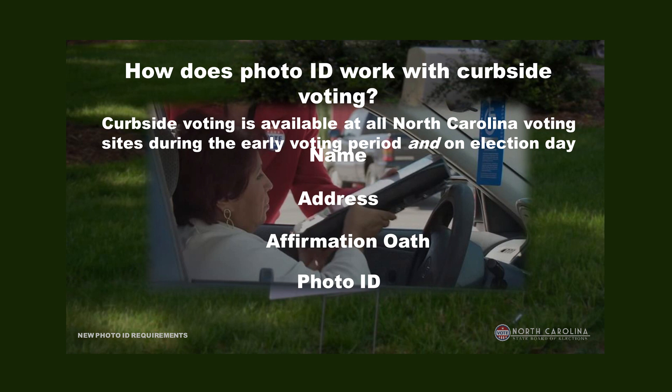The same process works with curbside voting. The election official comes out to the vehicle, asks the same questions. With curbside voting, there's also the oath of affirmation — you saying that you choose to vote this way — and a photo ID will also be asked for. If everything checks out, they give you a regular ballot. If it doesn't check out, there is another process, whether it's provisional voting or other procedures for an unacceptable photo ID.